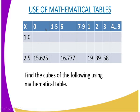0, 1, 2, 3, 4, 5, 6, up to 9. And also, we have another column which runs from 1 up to 9 still. And therefore, as far as the first question is concerned, you are told, find the cube of the following using mathematical table. For example,